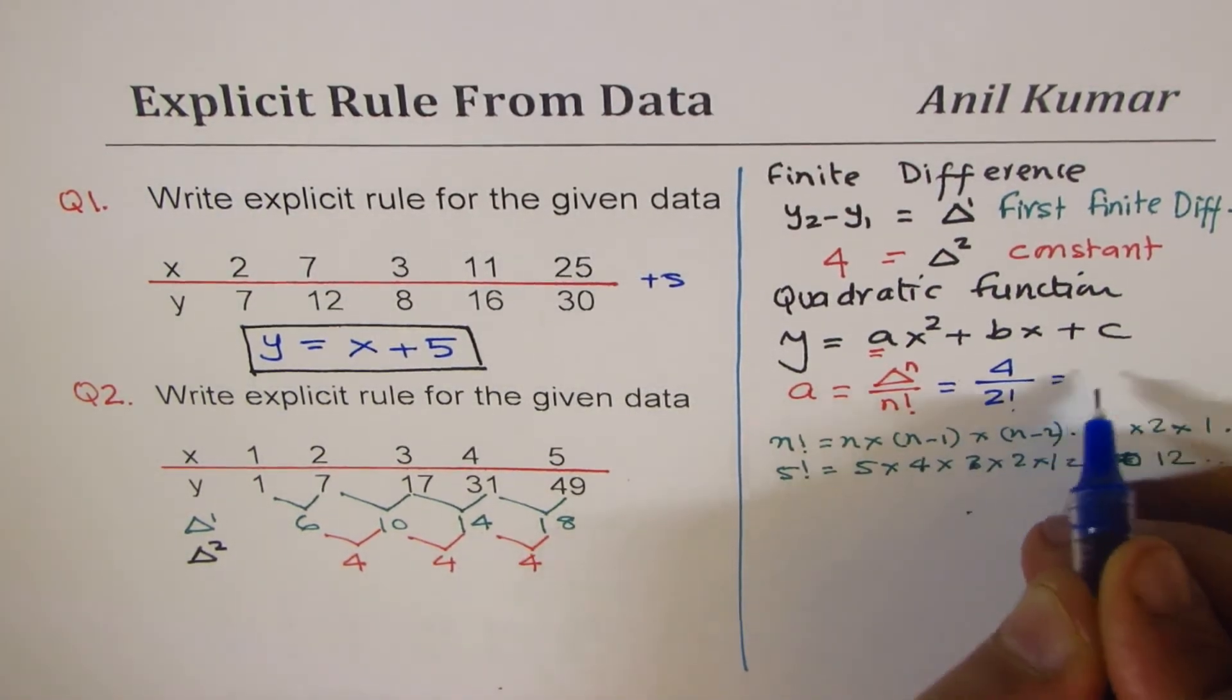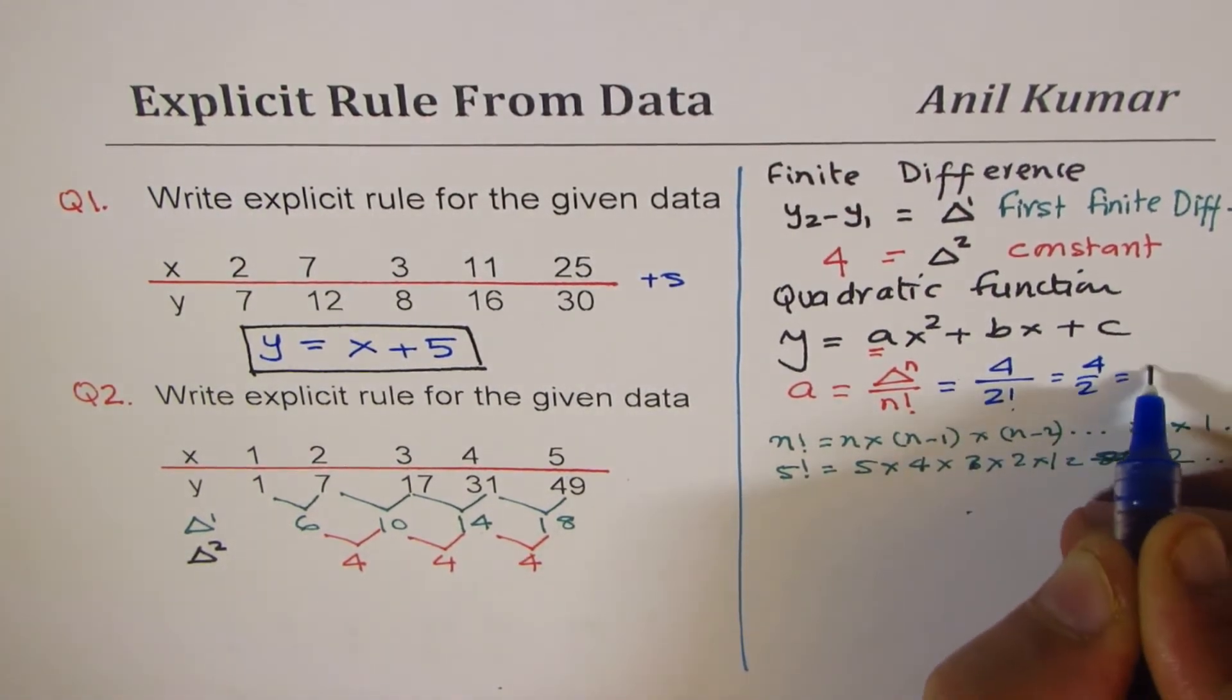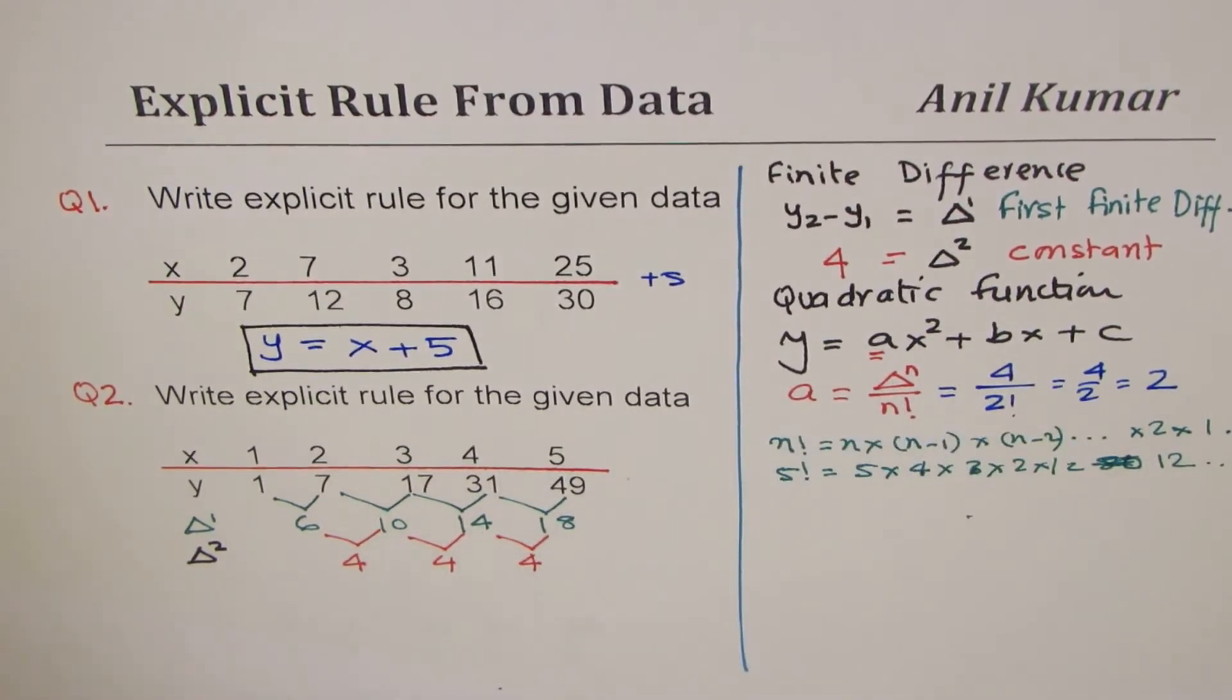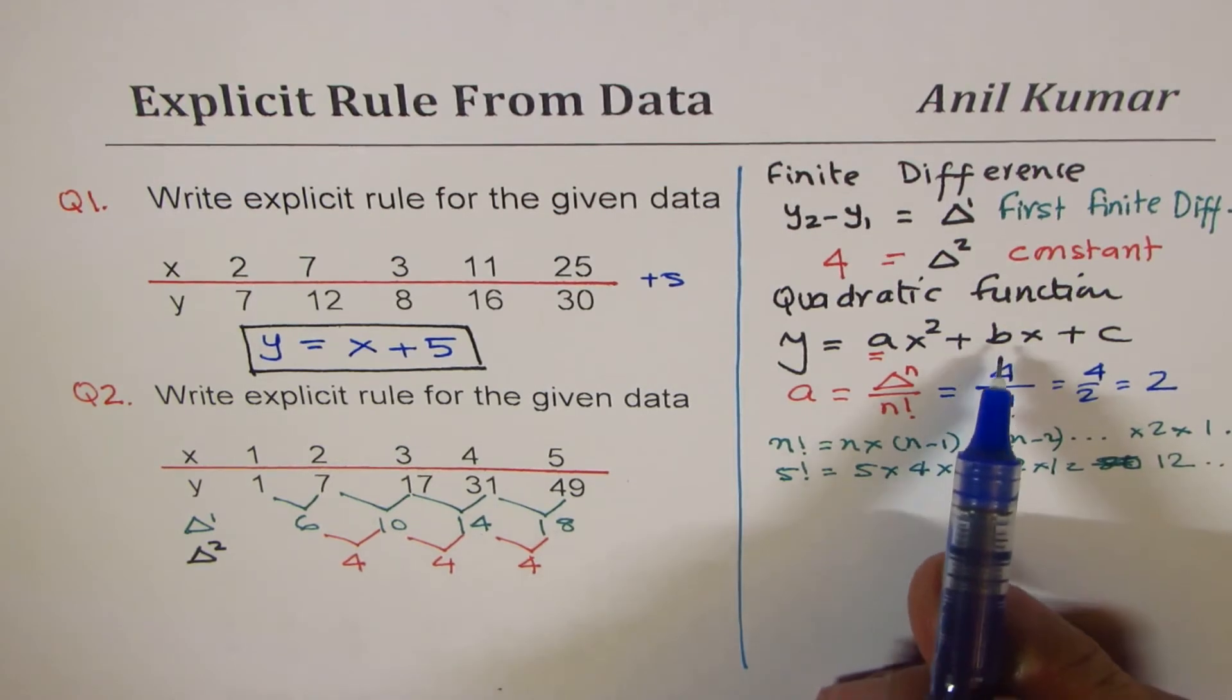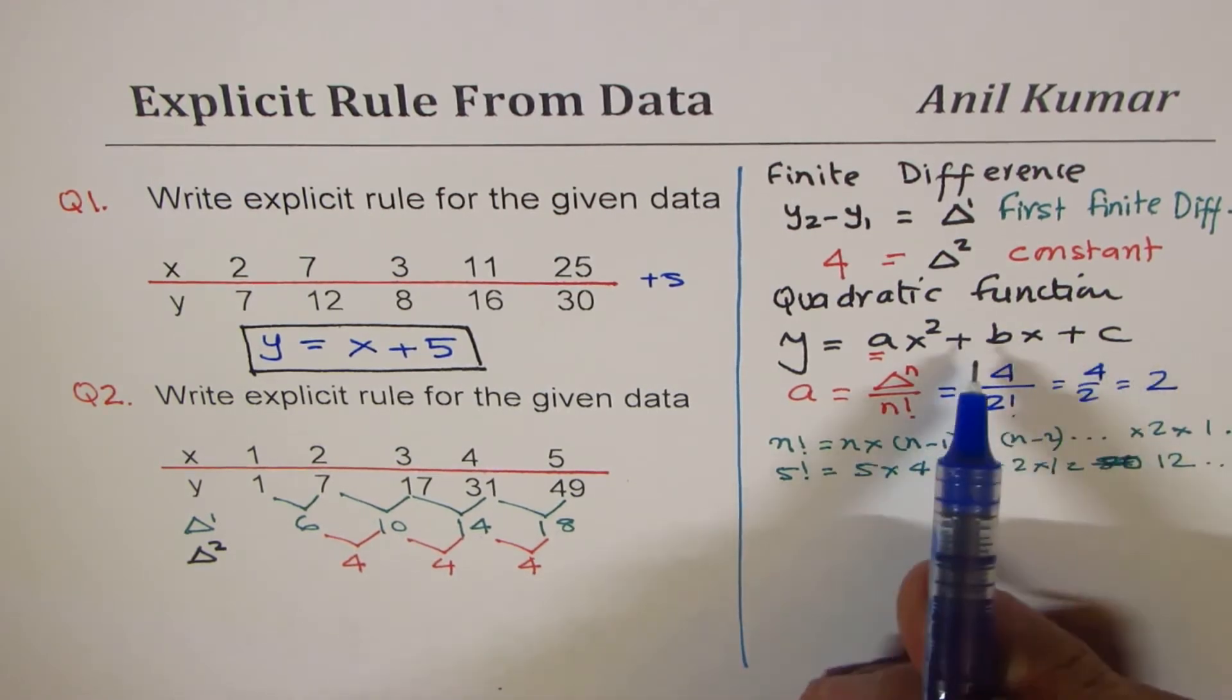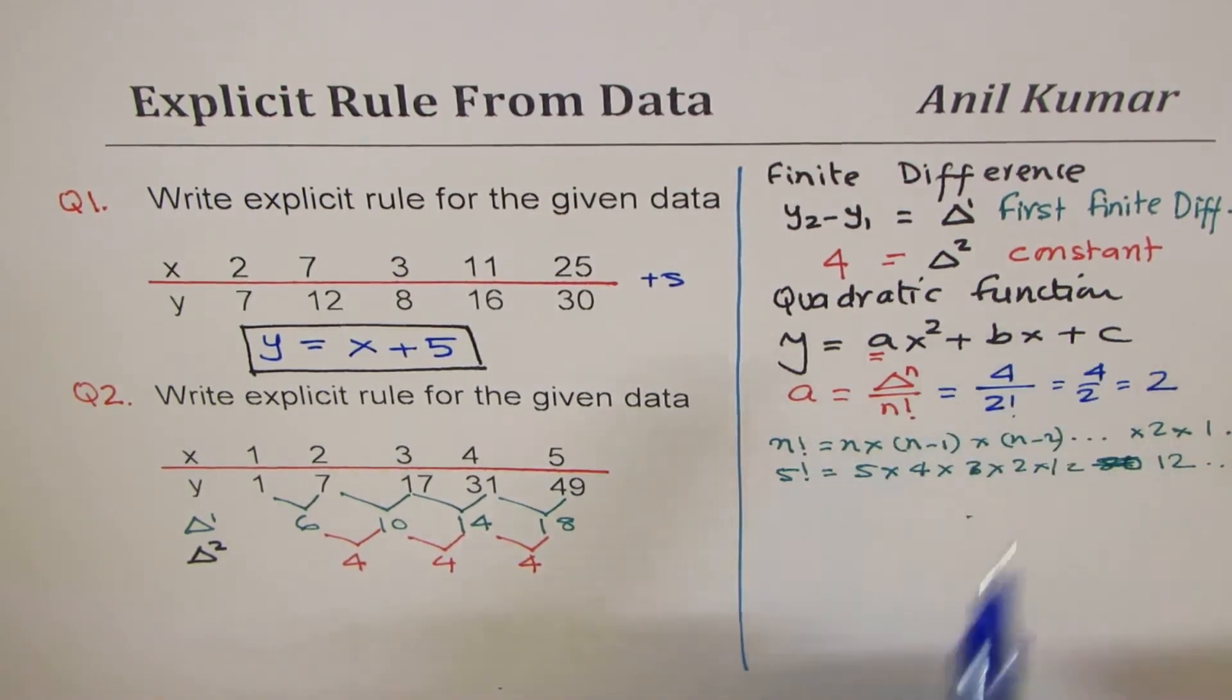So what do we get here? We get the value of a as 4 over 2, which is 2. So we have saved a lot of time by doing so. We can now work with only 2 equations to find b and c.